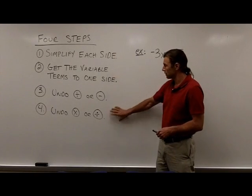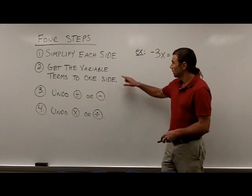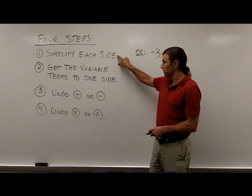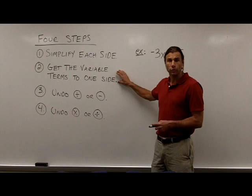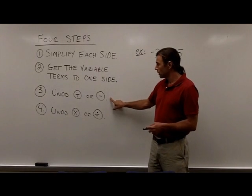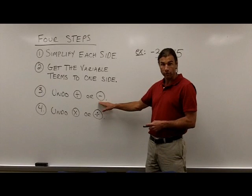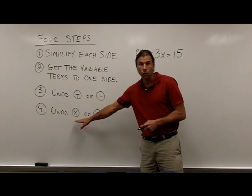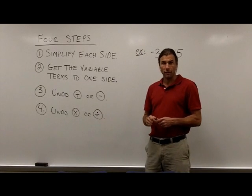There are four steps typically used to solve linear equations. The first is to simplify each side of the equation. The second is to get all the variable terms to one side. The third is to undo addition or subtraction on the variable side. And the fourth is to undo multiplication or division on the variable side.